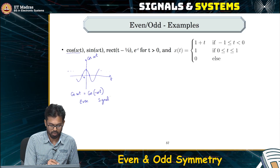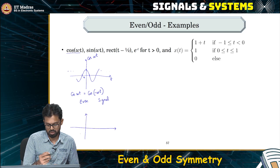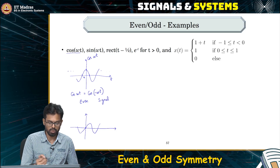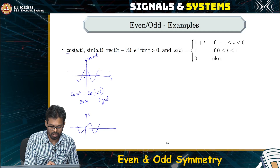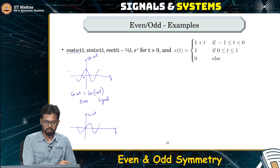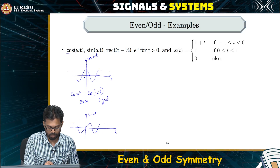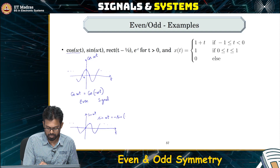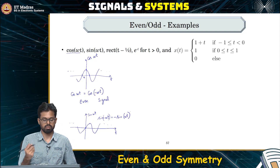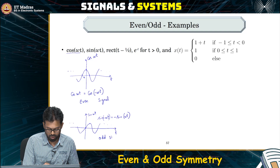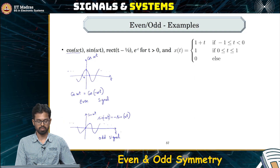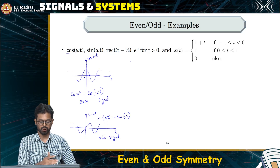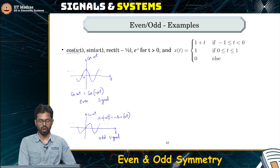Now, what about sin(ωt)? At t = 0 it is 0, and it attains its maximum at π/2. sin(ωt) has a reflection on the left-hand side, but also flipped in sign. In other words, sin(ωt) = −sin(−ωt). This makes sin(ωt) an odd signal. So if you compute the area under sin(ωt), it is going to be 0 simply because it is odd — you do not even have to do any integration, just by looking at it you can say it is 0.